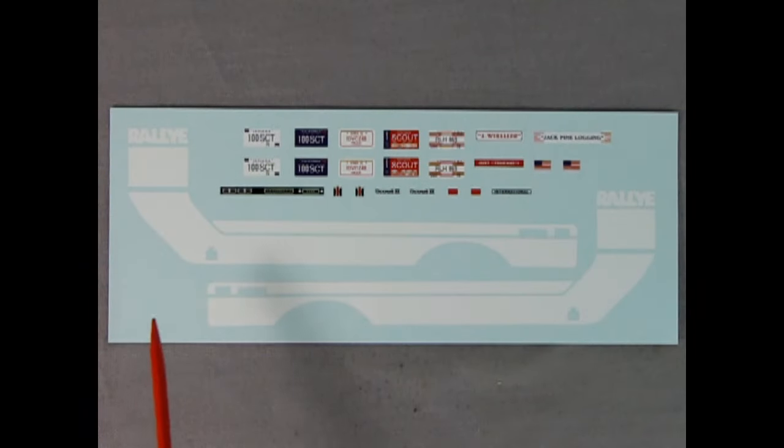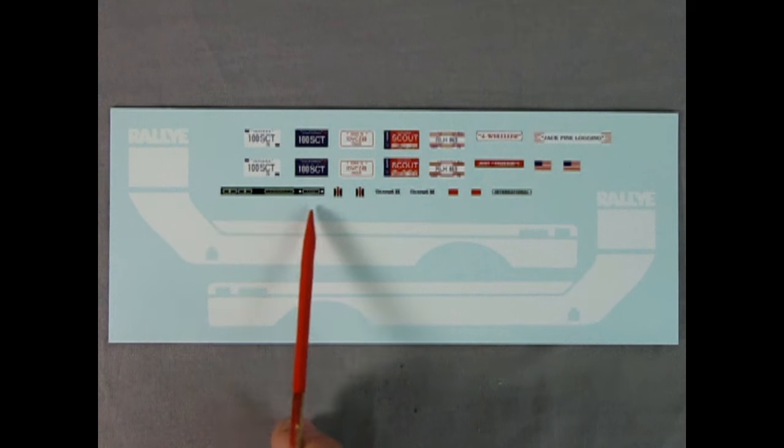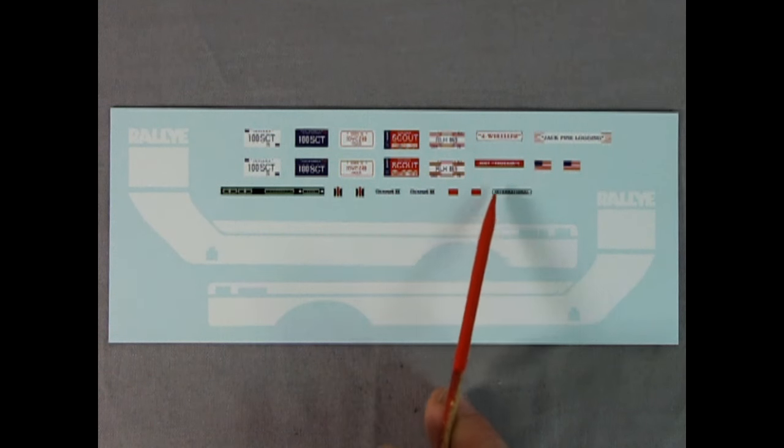Here's the decal sheet for our International Scout, and we have a good collection of license plates here. We have Indiana for 1976, California, Iowa, Michigan, and Illinois. These are all 1976 plates. There we have our instrument panel in one long strip, the International Harvester logo, as well as the Scout 2 logo and International here.